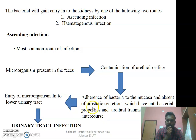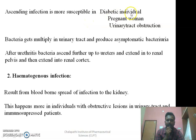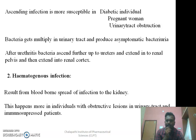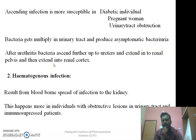Whatever microorganism entered into the urethra will slowly move towards the bladder, then to the ureters, and then to the kidneys, causing urinary tract infection. Ascending infection is more susceptible in diabetic individuals, pregnant women, and those suffering from urinary tract obstructions. The bacteria will multiply in the urinary tract and produce asymptomatic bacteriuria. In the initial stages, we won't observe any symptoms. After urethritis, the bacteria ascend upward through the ureters into the renal pelvis and then into the renal cortex, causing a very severe urinary tract infection.